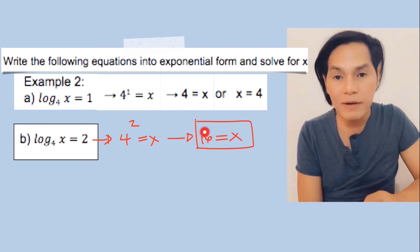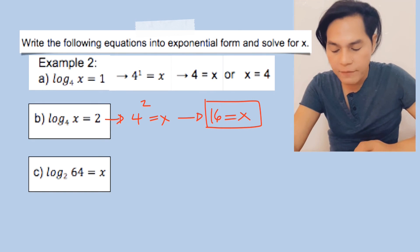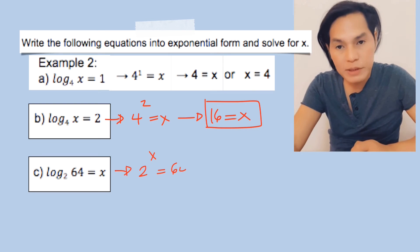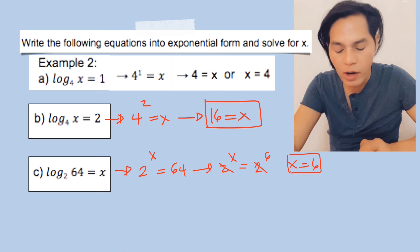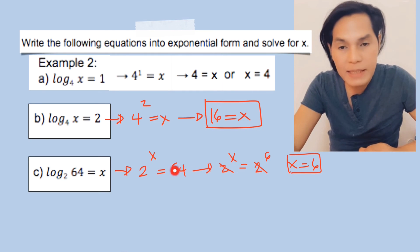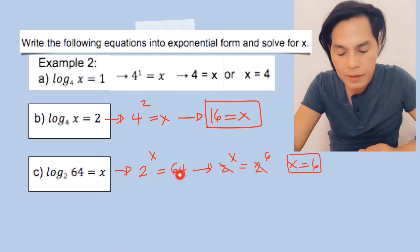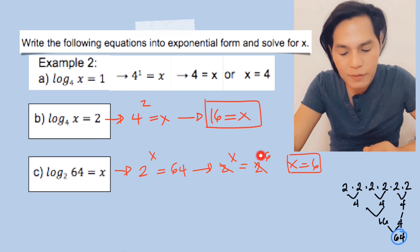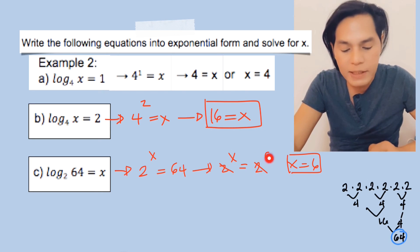For letter c: the log of 64 to the base 2 is equal to x. Change it into exponential form: 2 to the power of x equals 64. Now make the base the same on both sides — express 64 as a power of 2. That is 2 times 2 times 2 times 2 times 2 times 2, which is 2 to the power of 6. So we can equate the exponents and x equals 6.